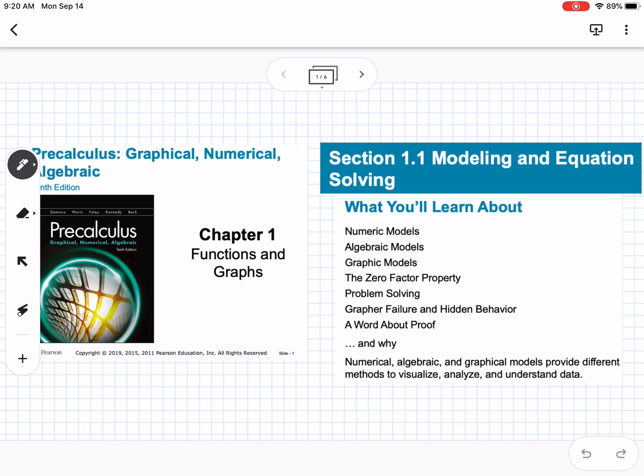Okay, so this is Chapter 1, Section 1.1, which is Modeling and Equation Solving. What we're going to learn about is numeric, algebraic, and graphic models, the zero-factor property, and we're going to do some problem-solving and talk about what happens when we have a graph failure.